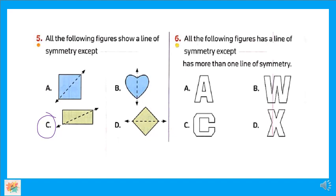طيب question six: all the following figures have a line of symmetry except — عنده has more than one line of symmetry. في شيب هنا عنده أكتر من line of symmetry — يعني تقدر ترسم جواه two lines of symmetry مش واحد بس. تعالوا نجرب: letter A — أقدر أرسم line of symmetry هنا؟ ما أقدرش. طب letter C — نقدر نرسم line هنا؟ ده اللين الوحيد اللي يقسم حكتين زي بعض. طب الـ W — لا ده ما ينفعش. يبقى مين الوحيد؟ الـ X! لأن ممكن نرسم line كده، وممكن نرسم line تاني كده — يبقى الوحيد اللي عنده أكتر من line of symmetry هو letter X.